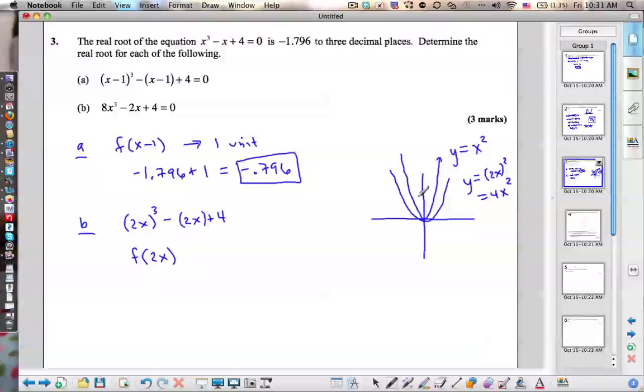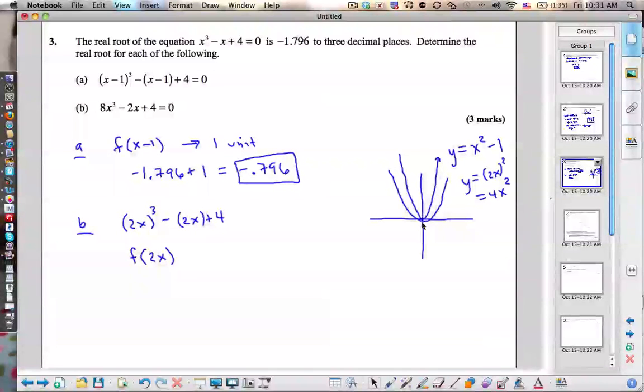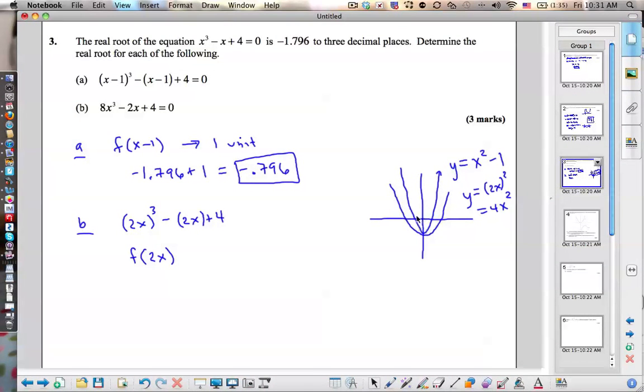And if I had shifted this down, so minus 1, you can see that the y values, the points where the function crossed the x axis, are cut in half, basically. So we can just do that, we say negative 1.796 divided by 2. So whatever that is, x equals, and that's number 3 for you.